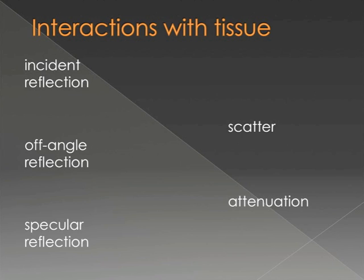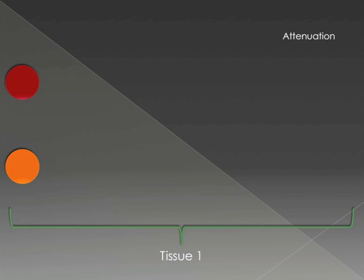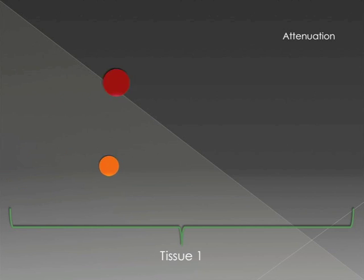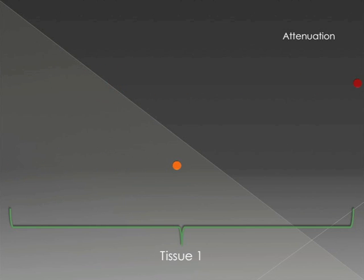Moving on to talk about our interactions with tissue. The interactions we're going to talk about today are three different types of reflection, in addition to scatter and also attenuation. Starting with attenuation — as you can see with the animation, as the sound wave travels through the tissue, it's actually losing energy as it goes along, represented by the size of the ball decreasing. The two different balls represent two different frequency sound waves. The red ball is a lower frequency, which is attenuated much less as it travels through the tissue, and the orange ball is a higher frequency sound wave that is attenuated faster as it travels through the same volume of tissue.